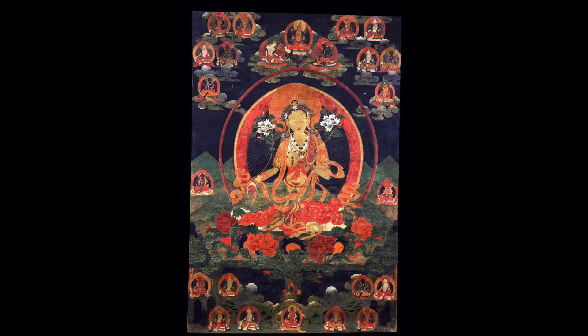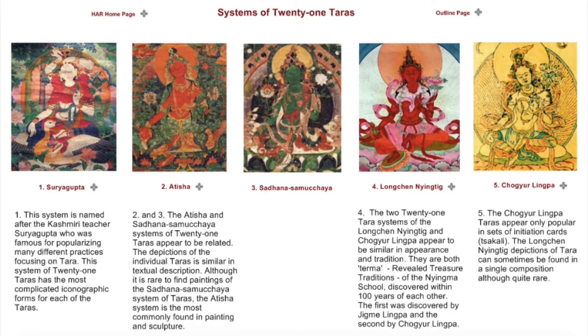Within that we have the Tara removing the eight fears. We also have the 21 forms of Tara. This may sound simple, but actually we have five common systems of 21: the Surya Gupta tradition, the Atisha tradition, the Longchen Nintic tradition coming from Jigme Lingpa, the Chogyalimpa tradition from the 19th century, and the Sadhana Samuchaya tradition.